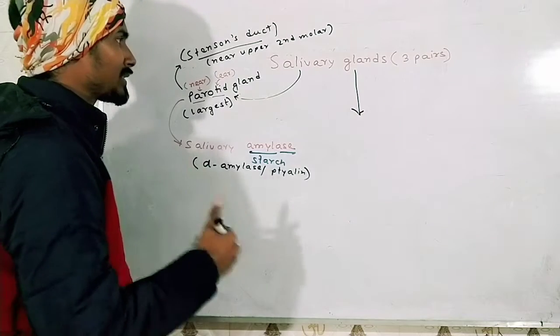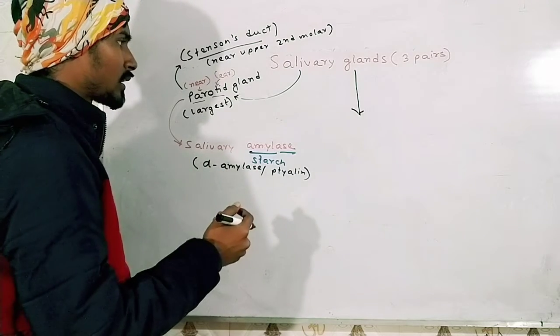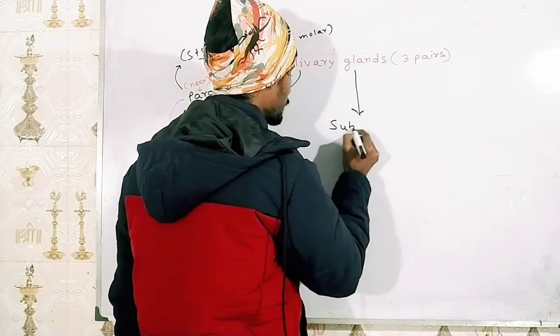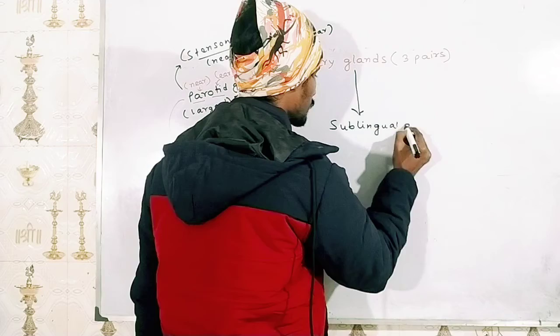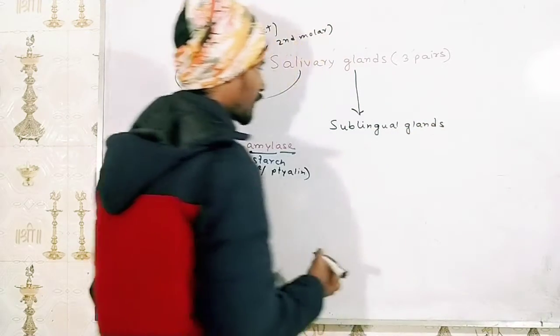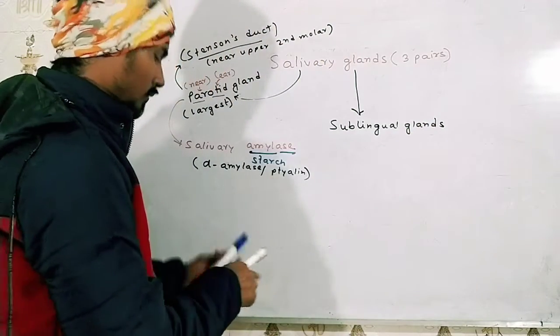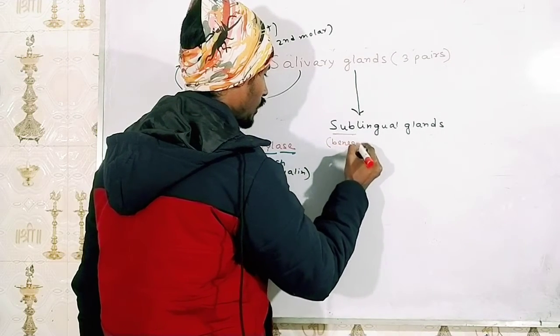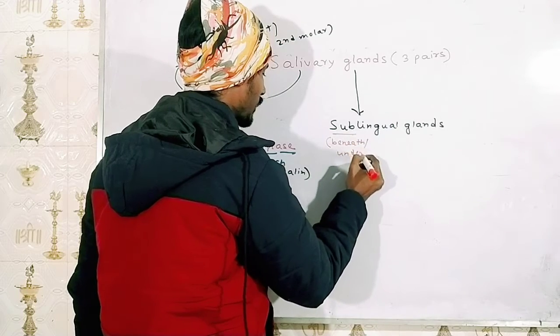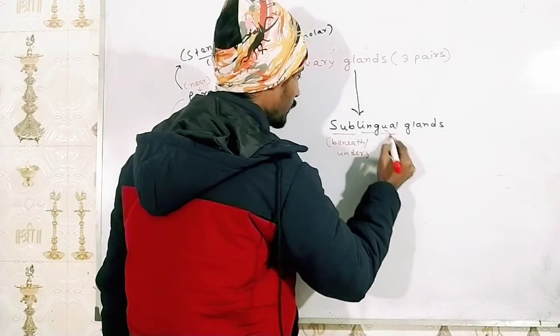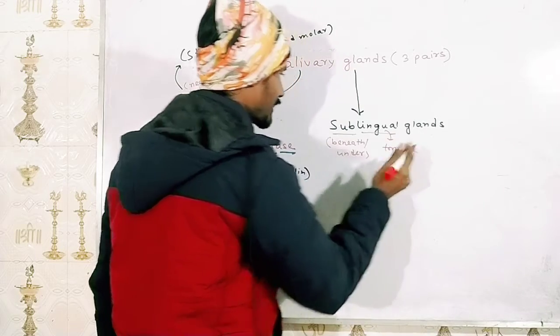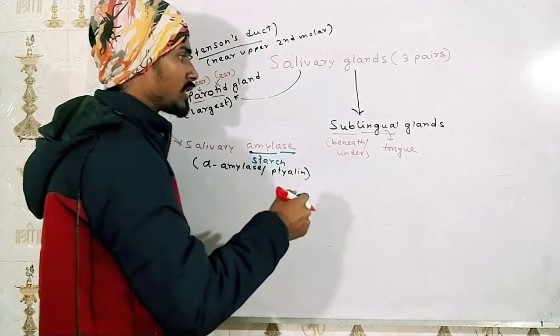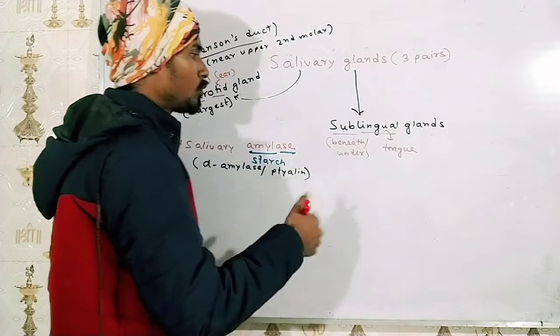Now let us discuss about the other glands. The next gland we are going to talk about are the sublingual glands. As you can see, sub means beneath or under something, and lingua means tongue. As this gland is present just beneath or under the tongue, it is called the sublingual gland.